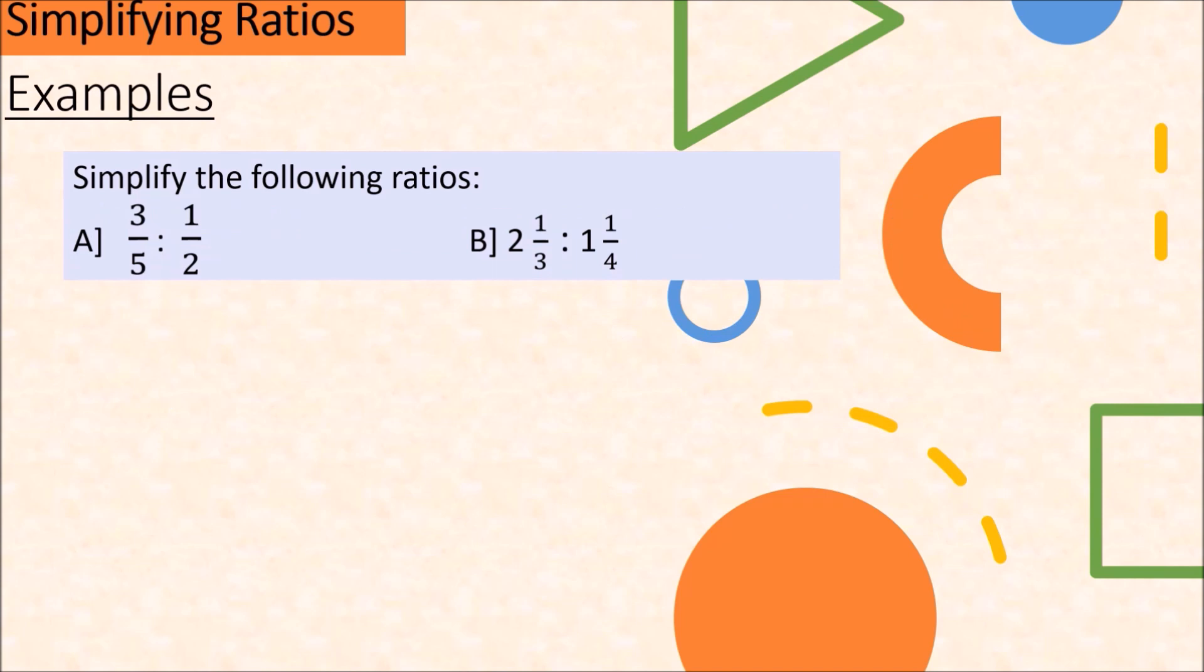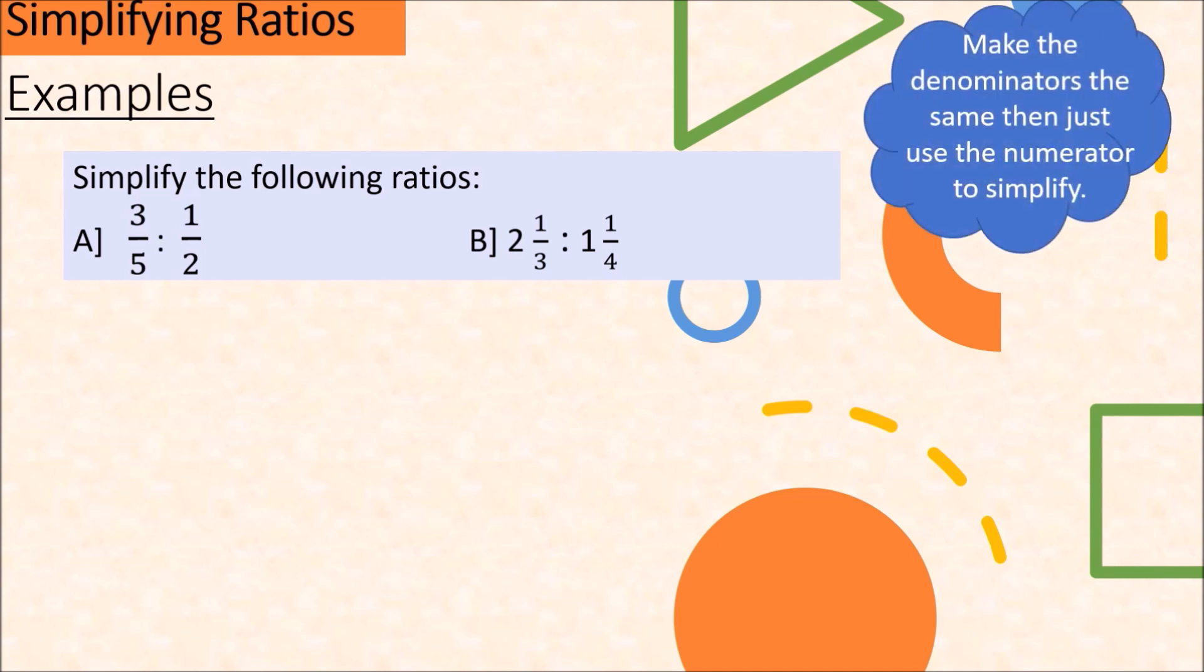Now, what if we have fractions in our ratio? How will we simplify? Well, the trick is, make the denominators the same, then just use the numerators in your ratio and simplify as necessary.